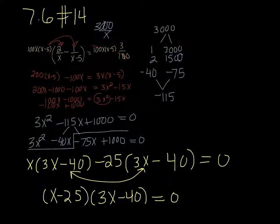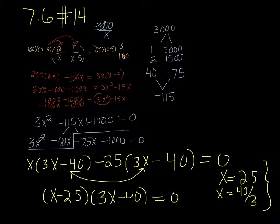And we can see that we're going to get two values. X equals 25 and X equals 40 over 3. We just want to make sure that neither one of those values will make the denominator undefined. And they won't. So we actually get two answers for this. But the question wants to know the larger. And the larger would be the 25.